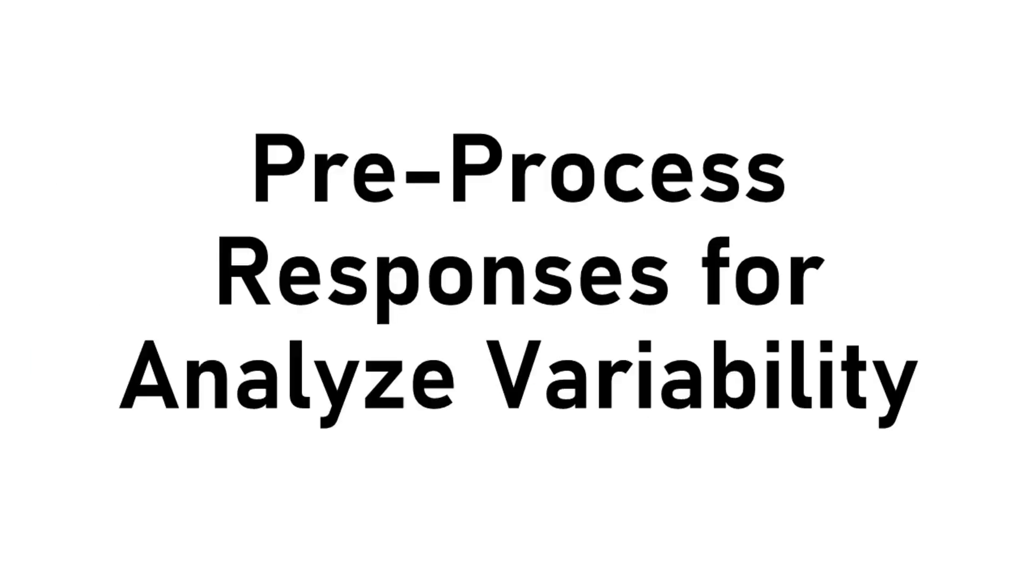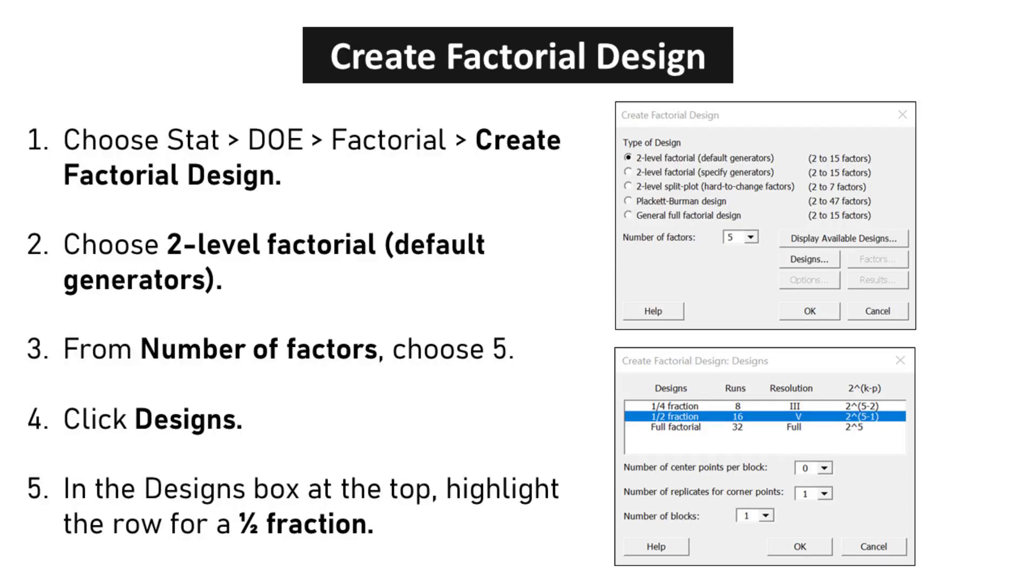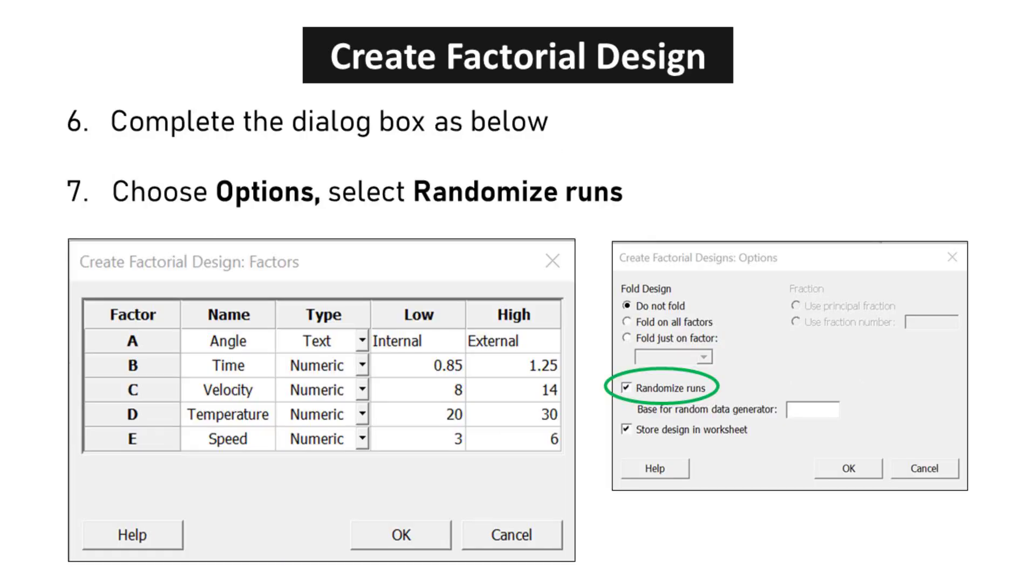Preprocess responses for analyze variability. Choose STAT, DOE, factorial, Create Factorial Design. Choose two-level factorial, default generators. From number of factors, choose 5. Click DESIGNS. In the DESIGNS box at the top, highlight the row for a half fraction. Complete the dialog box as below. Click OK in each dialog box.